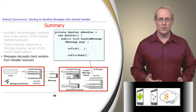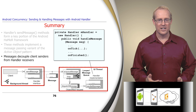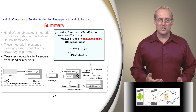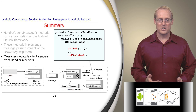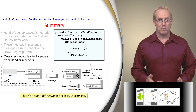Unlike the handler's use of runnable commands, which centralizes the processing logic at the point where the post method is invoked, the sendMessage methods decouple client senders from handler receivers. Developers must therefore extend the handleMessage hook method and write explicit logic to handle the messages it receives. While there's an extra step involved, this decoupled approach can be more flexible and parameterizable than the centralized model provided by post's use of runnable commands.